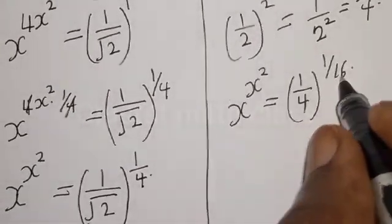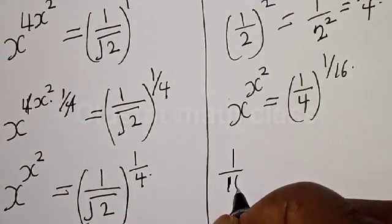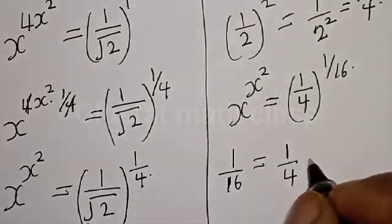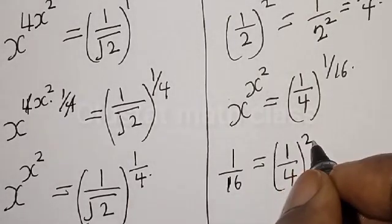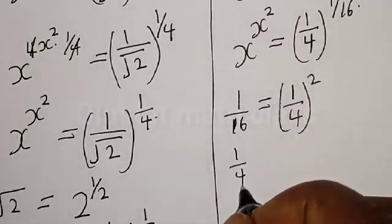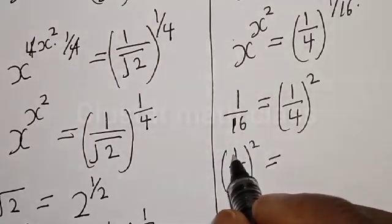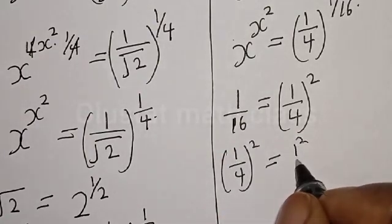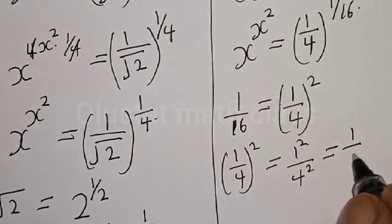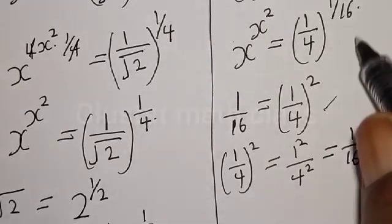Now 1 divided by 16 can be rewritten. We have 1 over 16 is the same thing as 1 over 4, all squared. If you have 1 over 4 all squared it's going to be 1 over 16, that is 1 squared divided by 4 squared, which gives you 1 divided by 16 back.